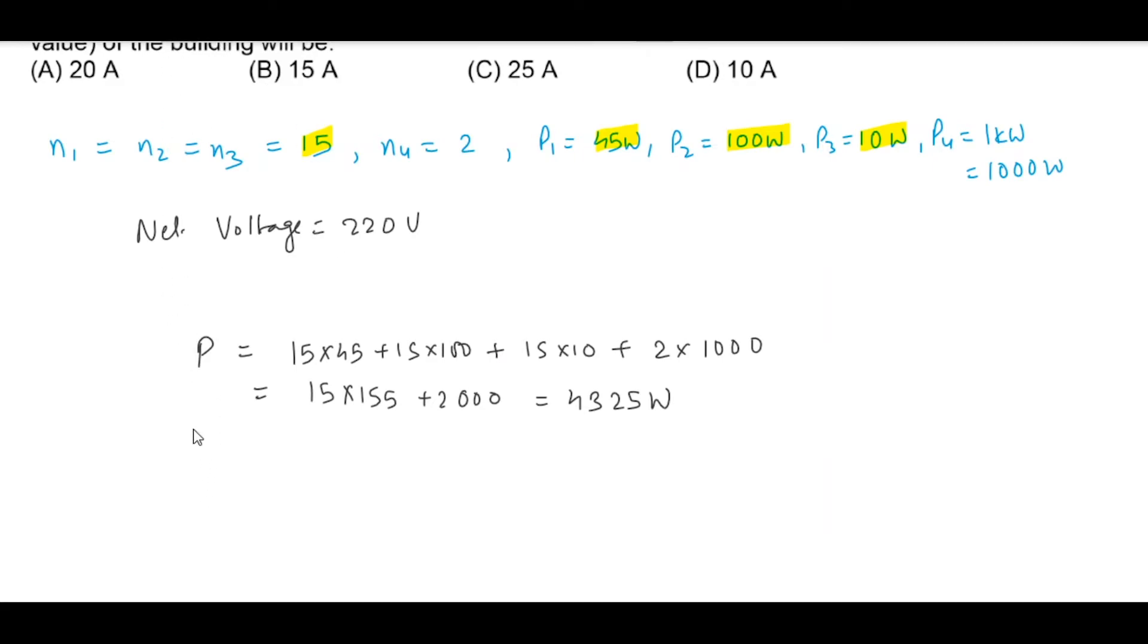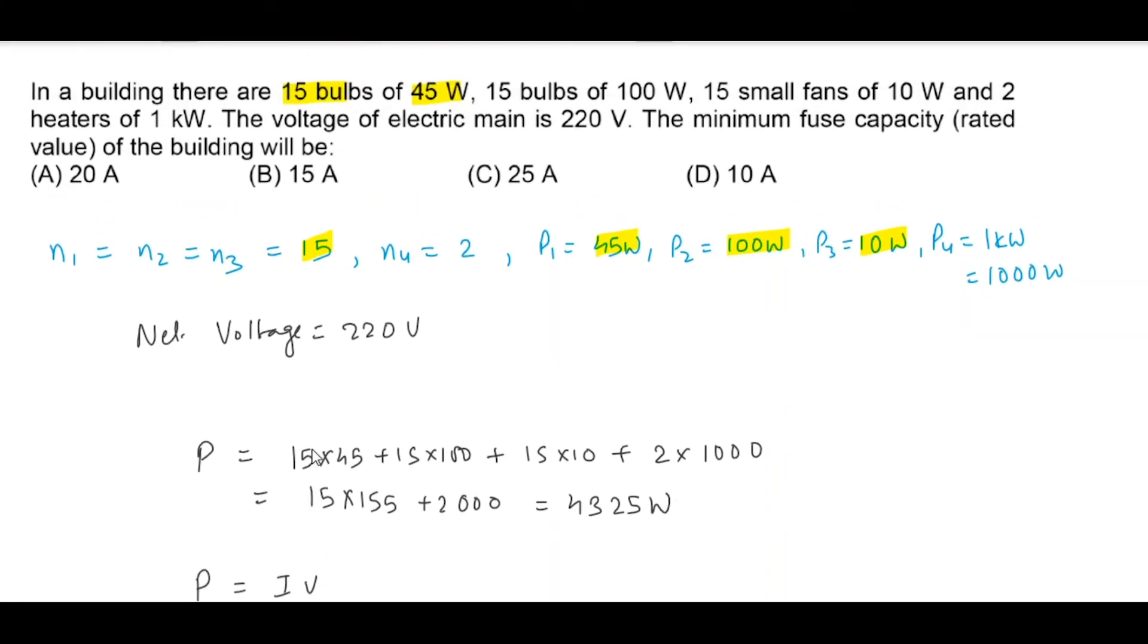Power P is equal to I times V, so current I is P by V.